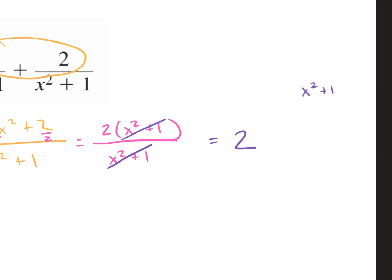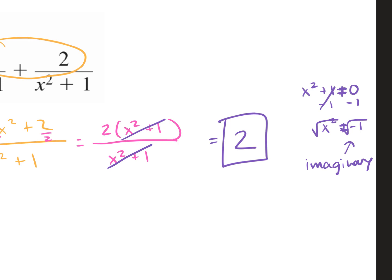When we cancel, we have to say x squared plus 1 does not equal 0. So we solve: subtract 1 from both sides — x squared does not equal negative 1. Square root both sides. Can I take the square root of negative 1? No — that gives an imaginary number. Since it's imaginary, we don't write it in our answer. Our answer is just 2. You only have to worry about the restriction if it's a real number.